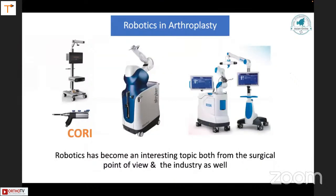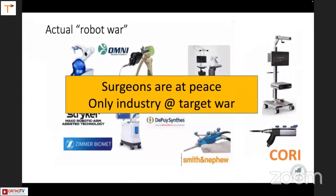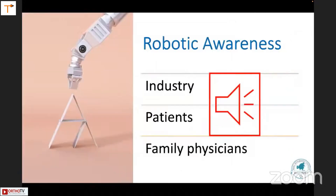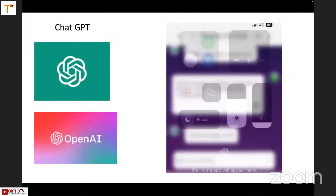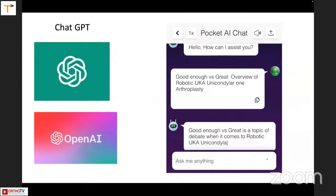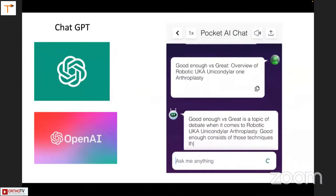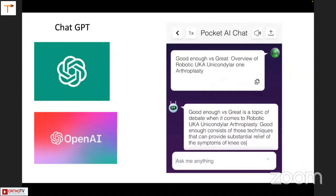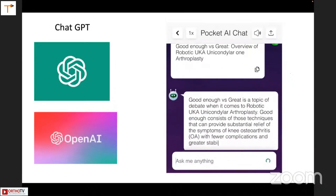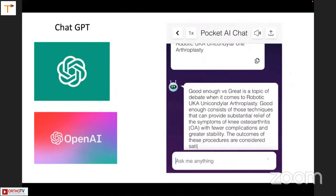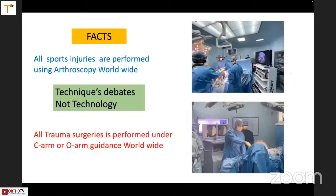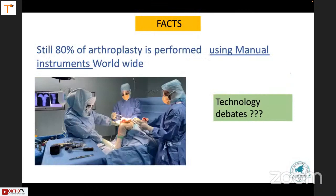Robotics in arthroplasty is an interesting topic from both the surgical and industry perspectives. We are in a robotic war, but surgeons are at peace — only industry is at war. Robotic awareness is greater among industry, patients, and family physicians than among surgeons. Even ChatGPT can tell you what is good and what is great about robotics — patients have all this data. Meanwhile, orthoplasty meetings still debate techniques, not technology.